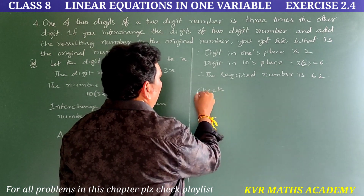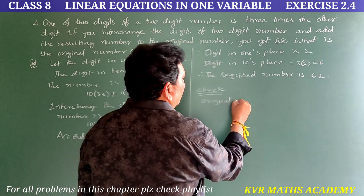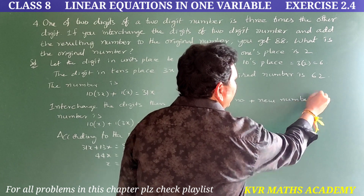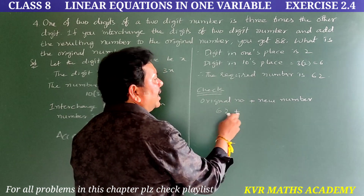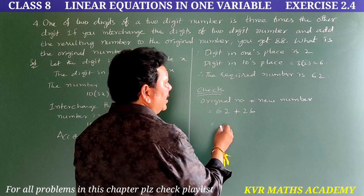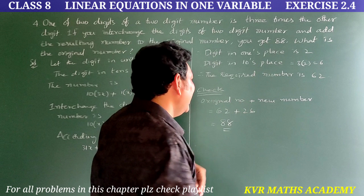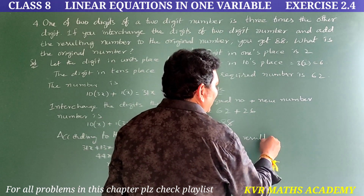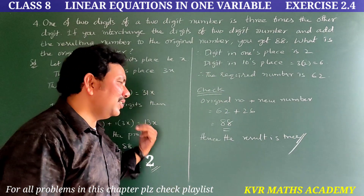Let us check: original number 62 plus interchanged number 26 equals 62 + 26 = 88. We got 88. Hence the result is true. Have you understood? Note it down.